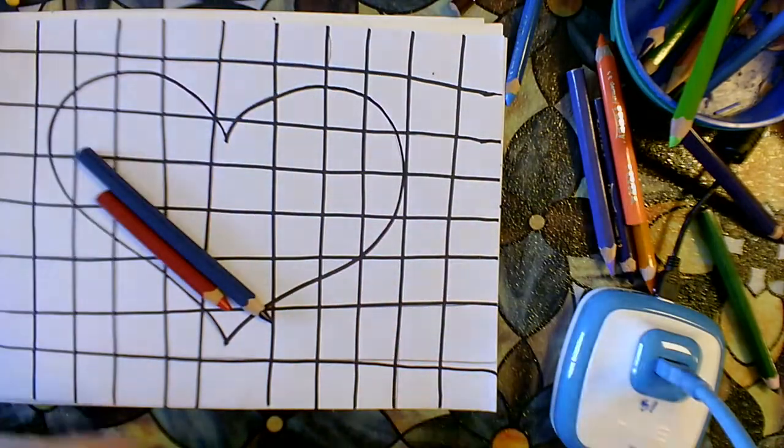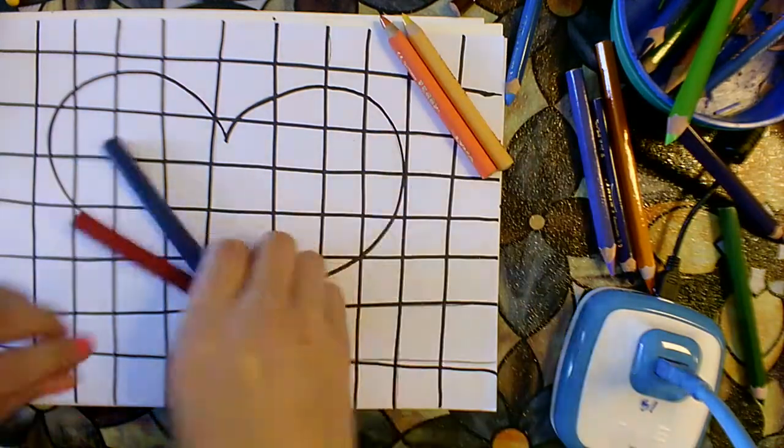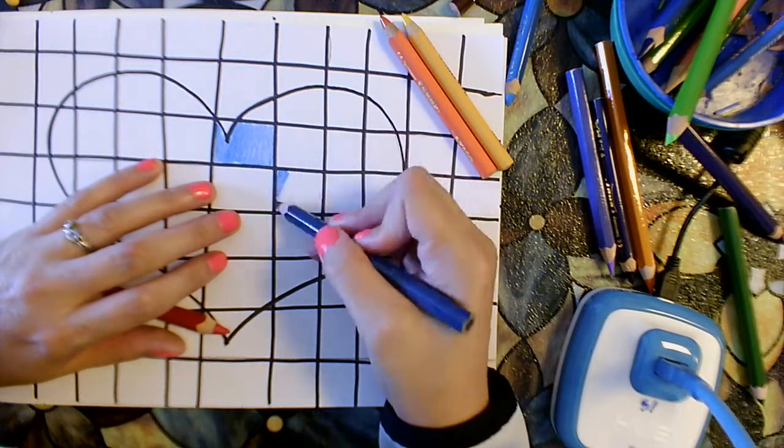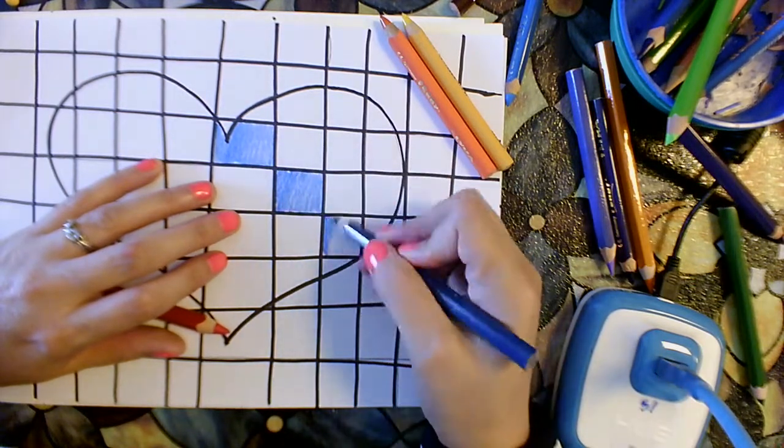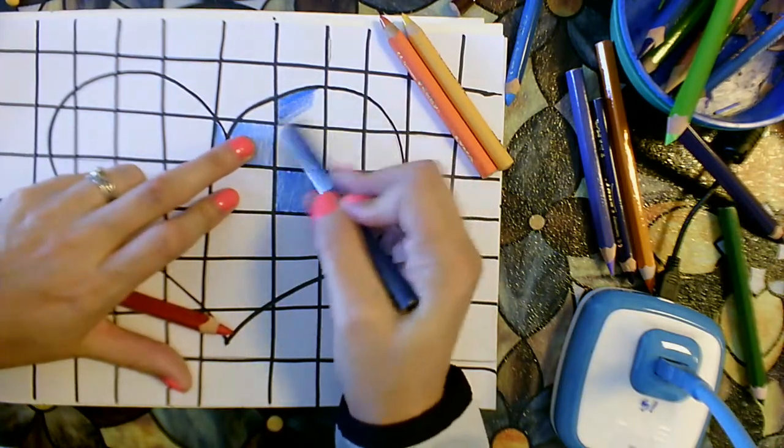So as I choose my colors, I want to make sure that I repeat the same colors over and over, and I always color a box and then go diagonally. That's how I can make sure I don't make any mistakes.